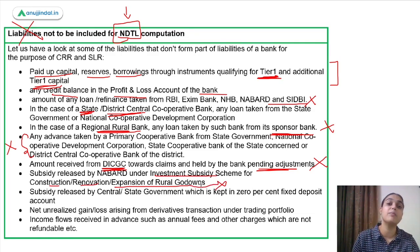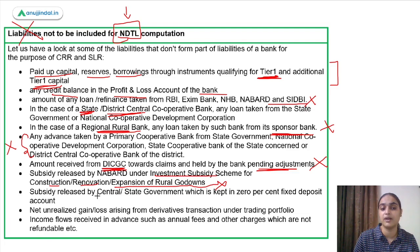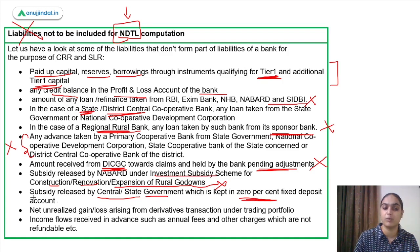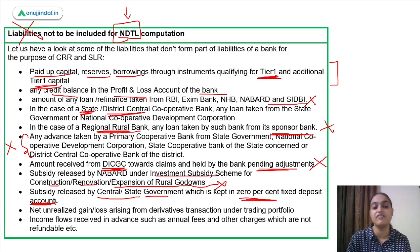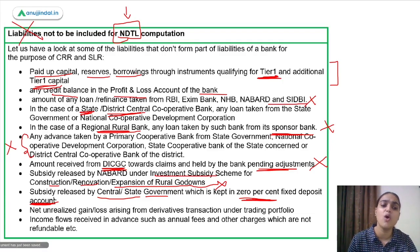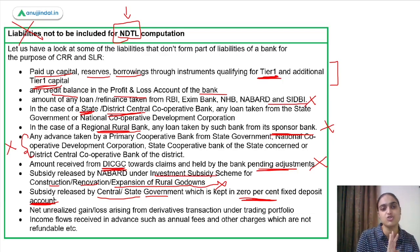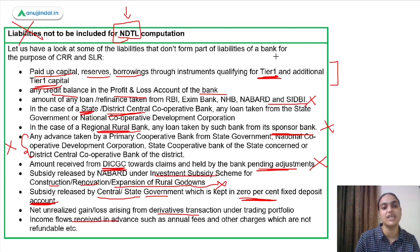Advances taken by primary cooperative banks from the state government, or loans from NABARD, state cooperative banks, or district central cooperative banks are also excluded. Any amount received by the bank from DICGC towards claims pending adjustment is not included in NDTL. Subsidies provided by NABARD under investment subsidy schemes for construction, renovation, or expansion of rural go-downs are also not included. Income received in advance is similarly excluded.